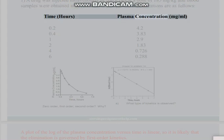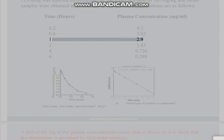The plasma concentrations are as follows. Time in hours, plasma concentration in mg/ml: 0.2 hours 4.2, 0.4 hours 3.83, 1 hour 2.9, 2 hours 1.83, 4 hours 0.726, 6 hours 0.288.